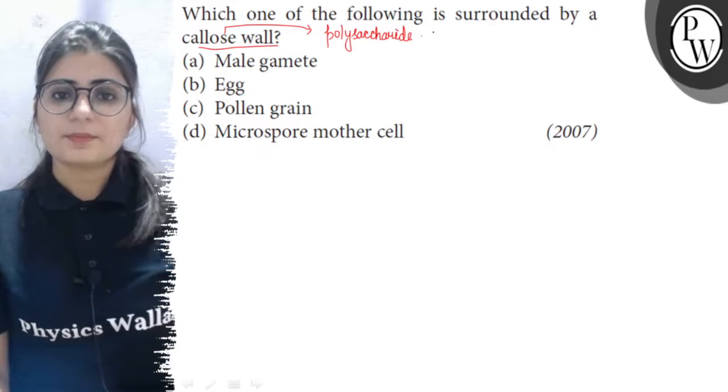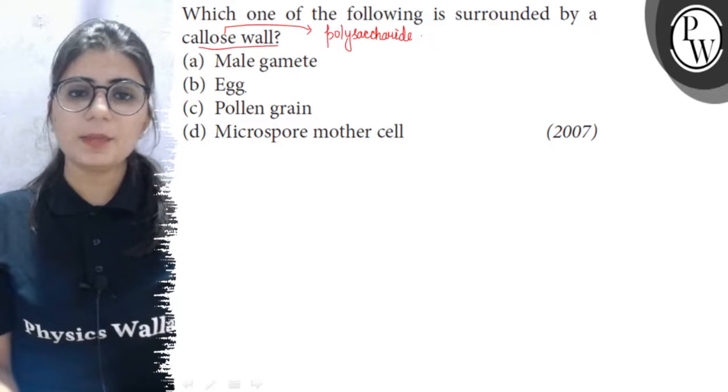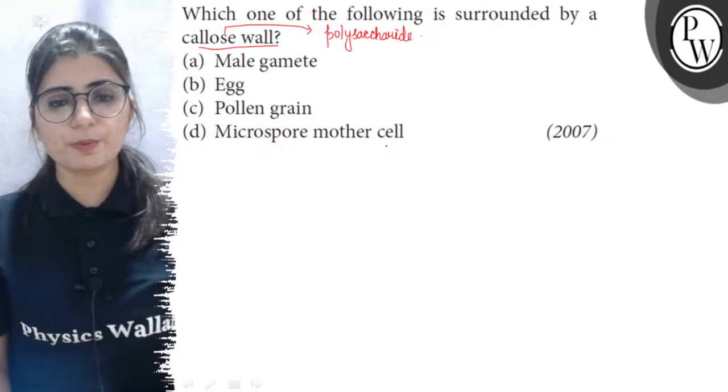It is present around which of the following? So, options are A. male gamete, B. egg, C. pollen grains and D. microspore mother cells.